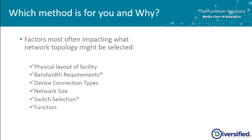Which method is right for you depends on several factors. Physical layout of your facility: if your switch is on one floor and all your endpoints are on another, it may not make sense to run fiber all the way from your central equipment room down 20 floors. Bandwidth requirements: if you have a device that is 100 gigs and you are only uplinking with 100 gig interfaces to your leaf switches, it may not make sense to direct-connect that device to the leaf instead of bringing it back to the spine, so you're not wasting an entire uplink.